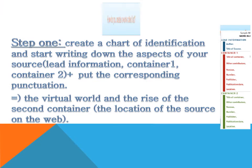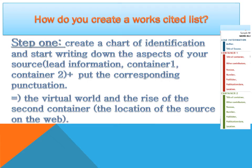To create a works cited list, the process involves two steps. Step one: create a chart of identification of the nine features of citation. During this step, write down the aspects of your source, starting with the lead information — author and title — then select the academic container aspects: the seven features starting from title of container through to location.